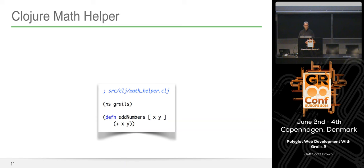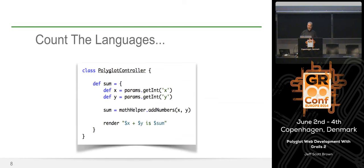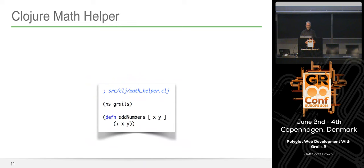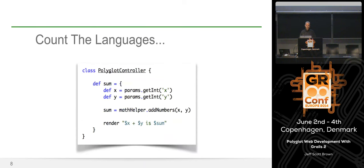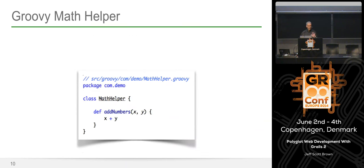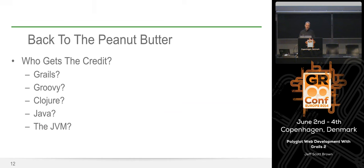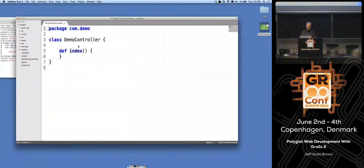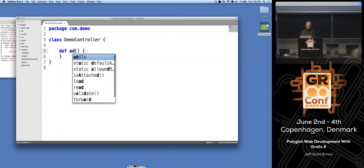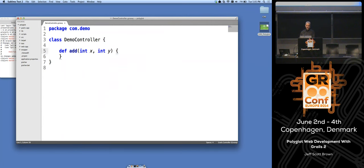Or maybe MathHelper is something more fundamentally different — maybe it's written in Clojure. Here's a Clojure function called `addNumbers` that accepts a couple of parameters and returns their sum. The syntax is more radically different, but it's doing the same thing. Back in this controller, when I refer to `mathHelper.addNumbers`, I could really be calling this Clojure function. One of the important points is I don't know or care from this perspective what language it was written in.